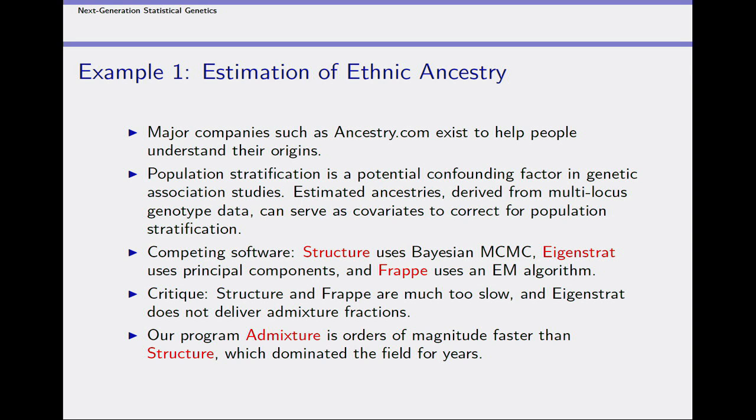If you do practical computing, you want an answer in at most a few hours — you need much faster turnaround time. There were some alternatives. One is Eigenstrat, which uses principal components — much faster, but it doesn't deliver the same thing as STRUCTURE, which delivers ancestry fractions. The Frappe program from Neil Risch's group used an EM algorithm, but although I liked the model, it also turned out to be much too slow.